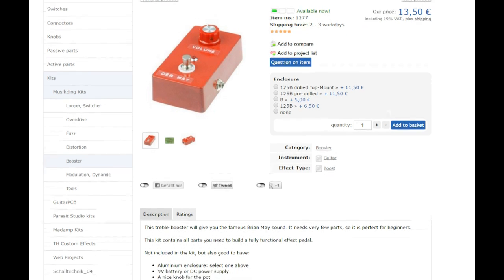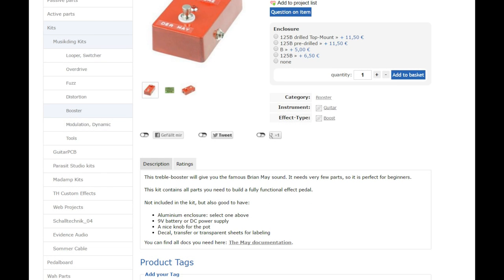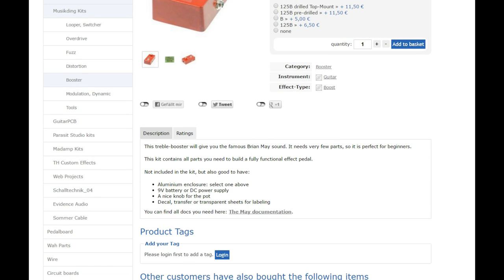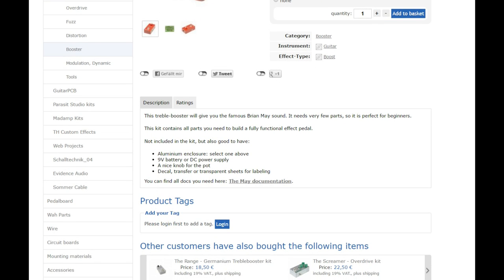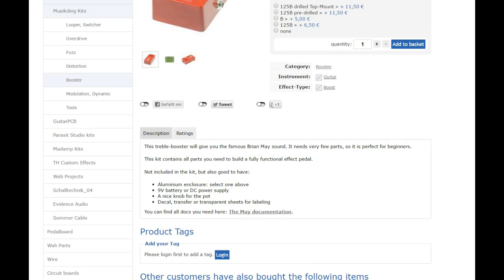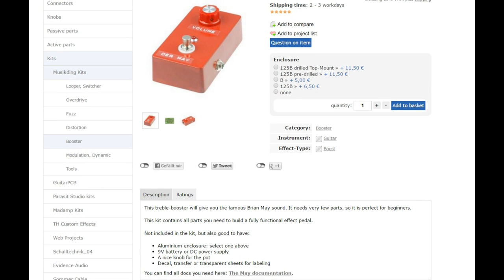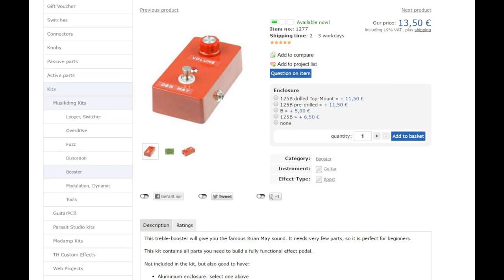Available direct from their website, Muzikding offers all required components in order for you to build the pedal yourself. For only 13 euros, you can order just the base kit which includes all but an enclosure and knob. Knobs and enclosures are available from Muzikding as well. Check out their site directly. They have a lot of neat stuff.